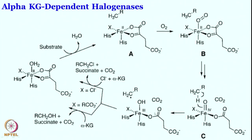Up to this point everything is exactly the same as in the dioxygenase. The iron(IV)-oxo then abstracts a hydrogen atom from the aliphatic substrate, giving a substrate radical (RCH2•) and a hydroxo intermediate. Now, in the halogenase enzyme, the halogen is sitting very close and nicely positioned with respect to this radical — even compared to the hydroxo. Therefore, quite excitingly, for the halogenase you get exclusively halogenated product formation. Succinate and carbon dioxide come out, and then halide is delivered to regenerate the catalytic cycle.